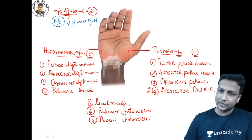The anatomical snuff box: extend your thumb — you'll see a depression formed on the lateral side of the wrist. This is where people historically placed snuff (tobacco) for sniffing. That's why doctors named it the anatomical snuff box. Boundaries: laterally, two tendons — Extensor Pollicis Brevis and Abductor Pollicis Longus. On the medial side, one tendon — Extensor Pollicis Longus.